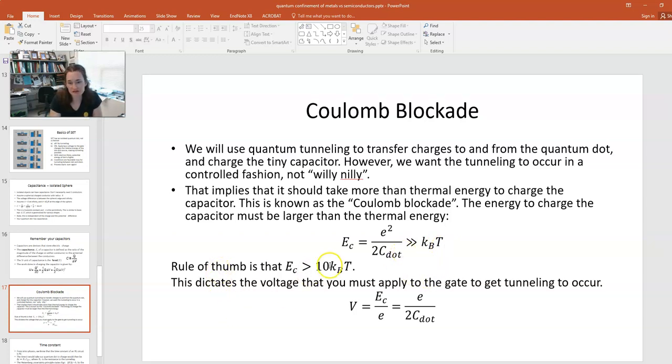Now the rule of thumb is that you want your Coulomb blockade energy to be greater than 10 kT. So that's a nice rule of thumb. Now, once you choose your Coulomb blockade energy, that means that you have now chosen the voltage that you have to apply to the gate to get tunneling to occur.